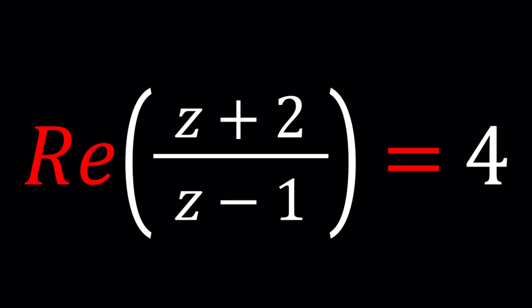We have a complex number z that satisfies this equation. We're going to find all the z values that satisfy this equation, which is the real part of (z+2) divided by (z-1) equals 4.